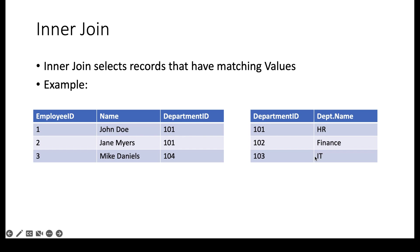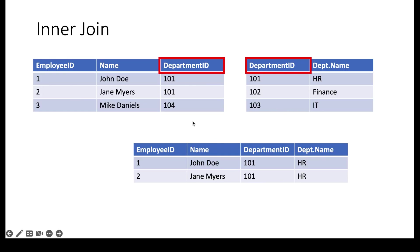If I were to do an inner join on these two tables, my output would consist of two records — John Doe and Jane Myers — with department ID 101 and department name HR. The reason is that inner join looks at the department IDs that exist in both tables. 101 is the only ID that exists in both the employee table and the department table, so only those two records come back.